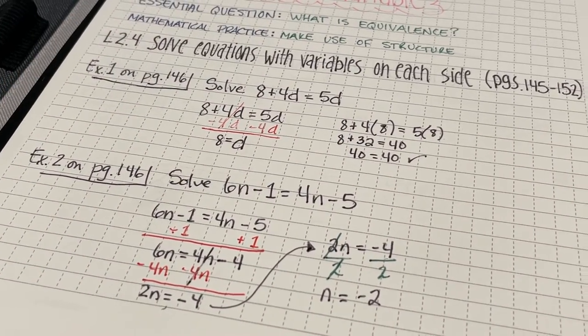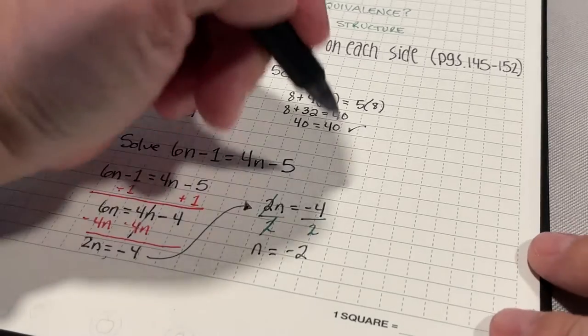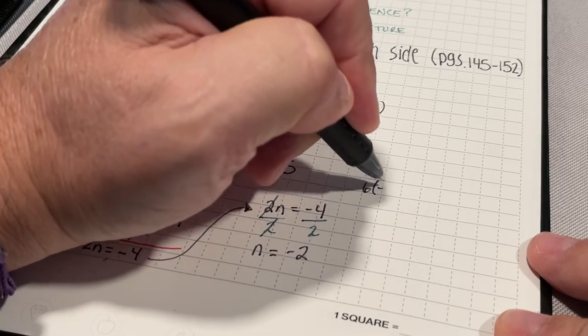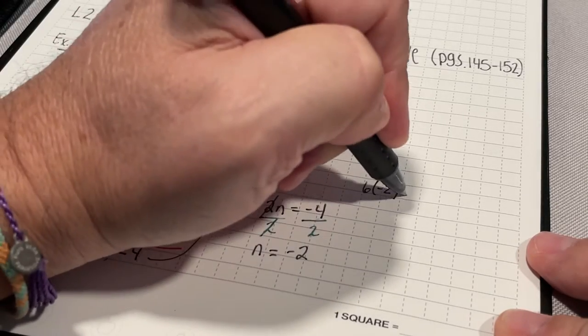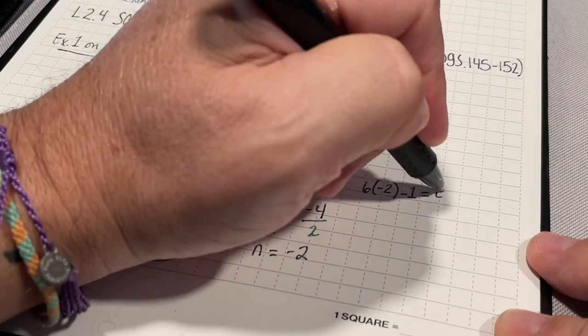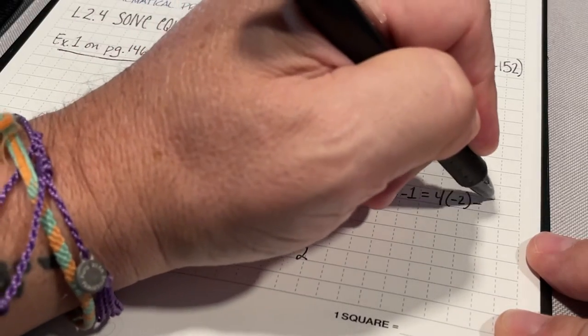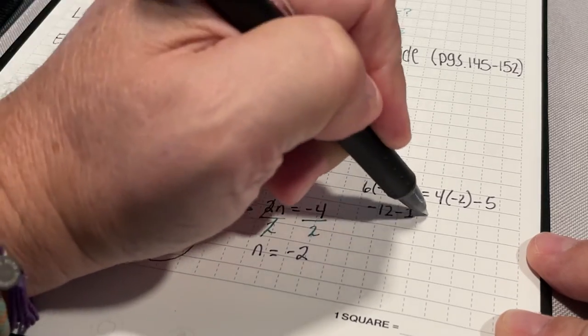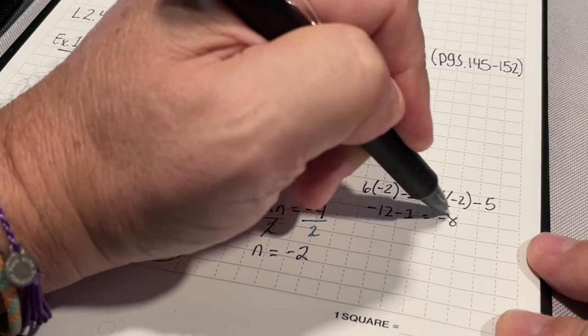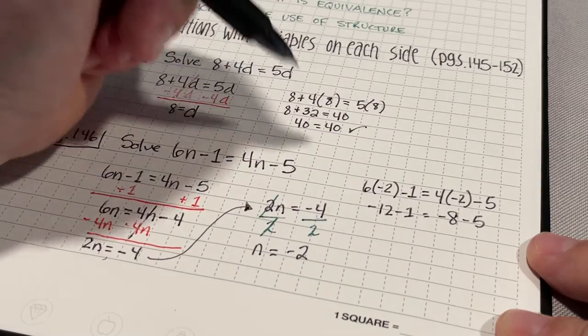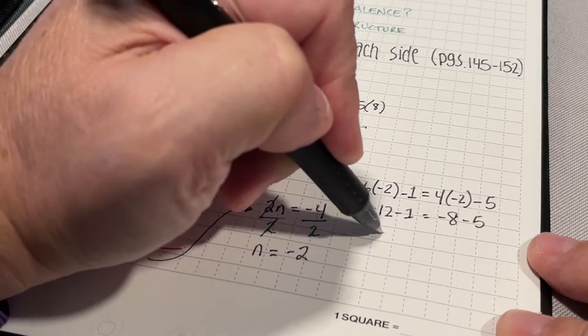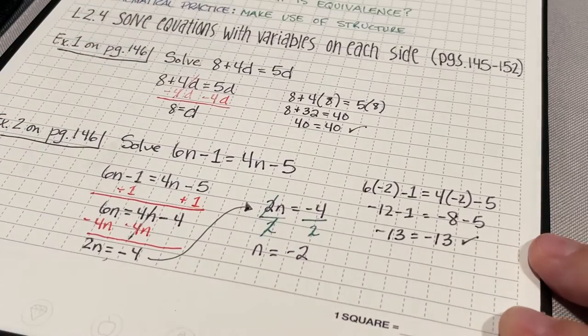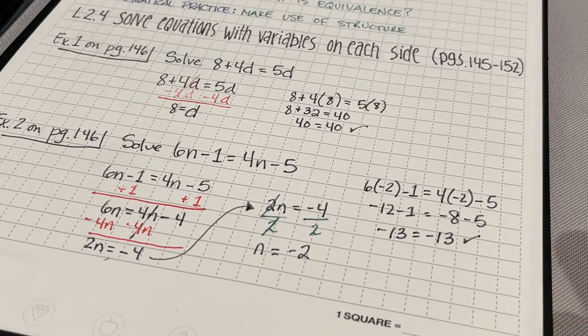Now, if I want to check my work to see if that's a true solution, I'm going to plug in my negative 2 everywhere there's an n. So, I have 6 times negative 2 minus 1 equals 4 times negative 2 minus 5. 6 times negative 2 negative 12 minus 1. 4 times negative 2 is negative 8 minus 5. Negative 12 minus 1 is negative 13 and negative 8 minus 5 is also negative 13. So, my solution of n equals negative 2 is correct.